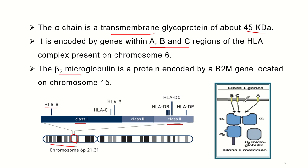The second chain is beta 2 microglobulin, which is encoded by the B2M gene. Unlike the alpha chain, beta 2 microglobulin is not located on chromosome 6; it is located on chromosome 15.